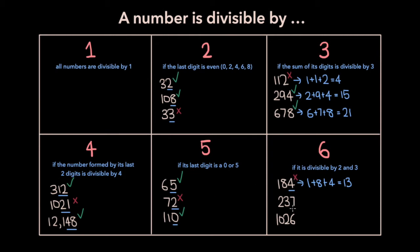Now for the number 237: to check if it's divisible by 2, we look at the last digit. 7 is not even, which means 237 isn't divisible by 2, which then means it isn't divisible by 6 either. Now for the number 1026, the last digit is 6, which is even, so 1026 is divisible by 2. Now to check if it's divisible by 3, we sum its digits: 1 plus 0 plus 2 plus 6, which is 9. 9 is divisible by 3 — 9 divided by 3 equals 3. And since 1026 is divisible by 2 and by 3, it's going to be divisible by 6 as well.